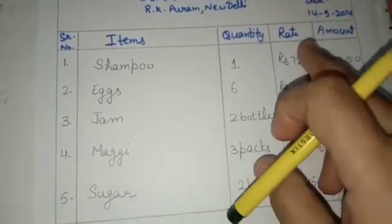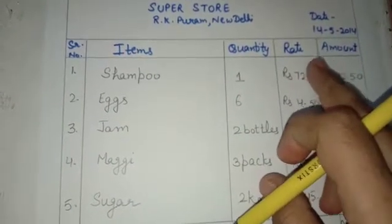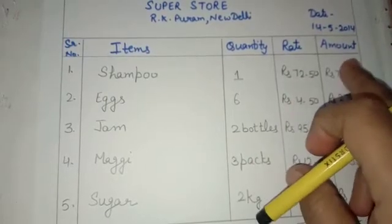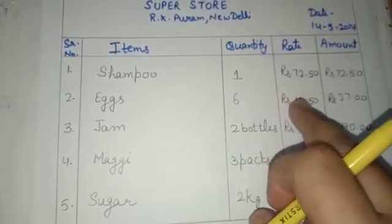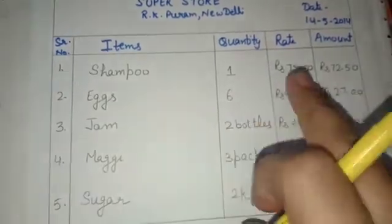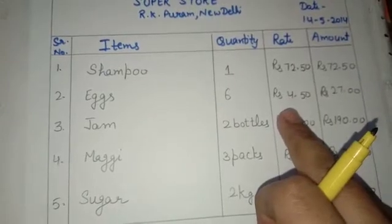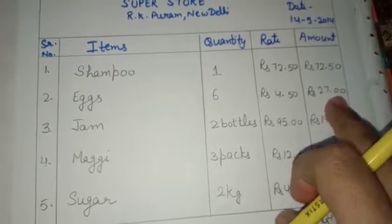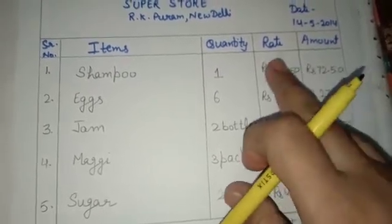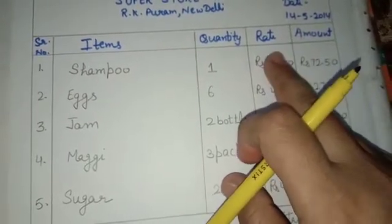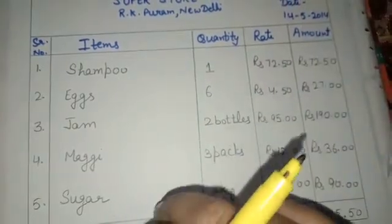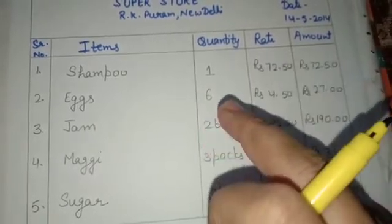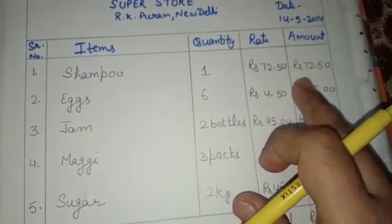Then rate — rate means the cost of one unit, for example the cost of one shampoo. Then amount — amount means the total cost for multiple units. For example, the cost for one egg is a certain rate, but amount means six eggs' cost: six multiplied by four point five zero equals twenty seven point zero zero. Rate is what a shopkeeper tells you per unit, say five rupees per packet, but if we are purchasing ten packets, then amount is the total cost we pay: five times ten equals fifty.